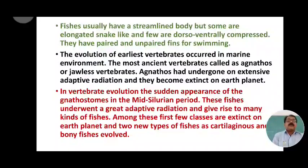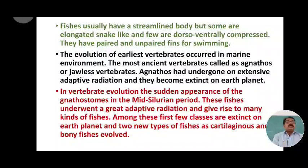Fishes usually have a streamlined body, but some are elongated and snake-like, or have a ventrally compressed body. They have paired and unpaired fins for swimming. With the help of fins, fish move and can change their place from one part to another for locomotion. Fins are of prime importance for swimming.